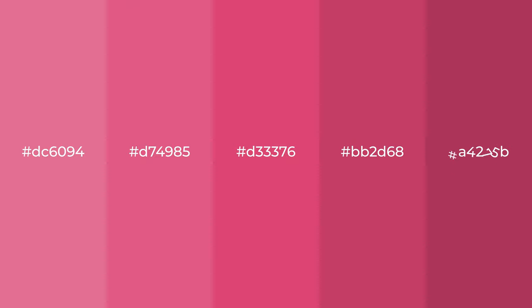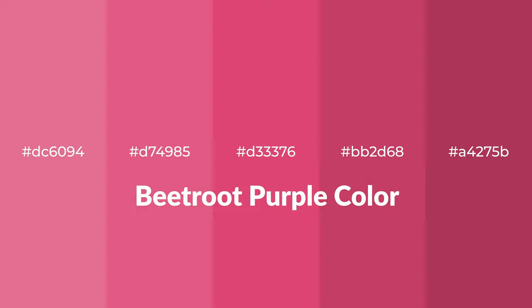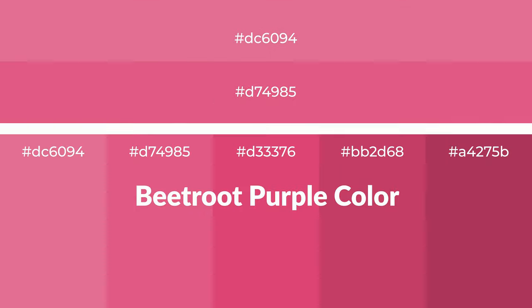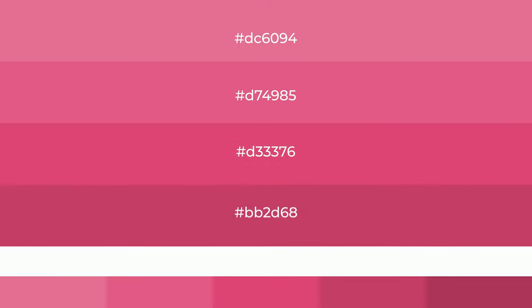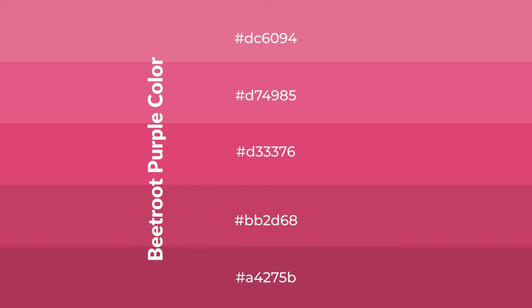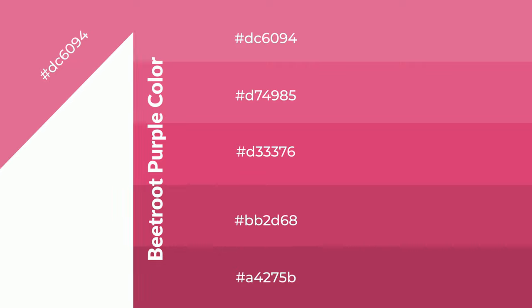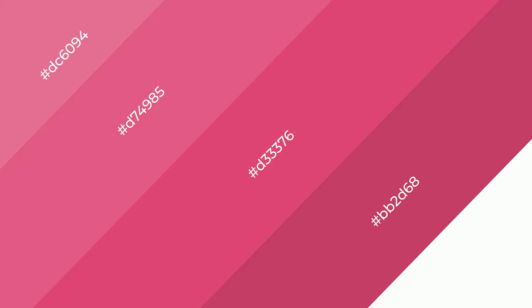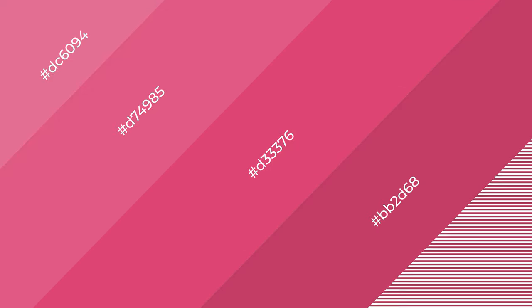Warm shades of beetroot purple color with violet hue for your next project. To generate tints of a color, we add white to the color — tints create light and exquisite emotions. To generate shades of a color, we add black to the color, and it is used in patterns, 3D effects, and layers. Shades create depth and drama.